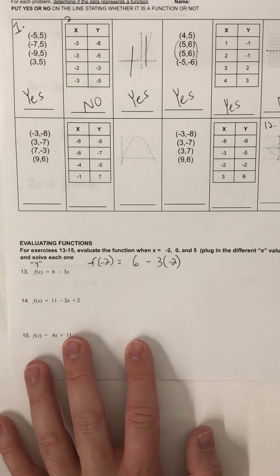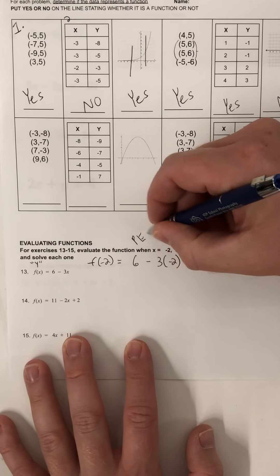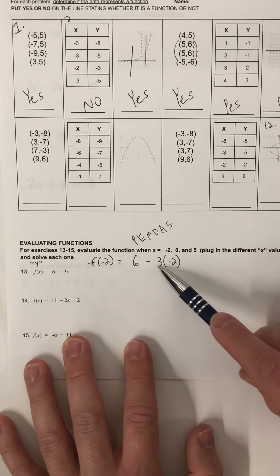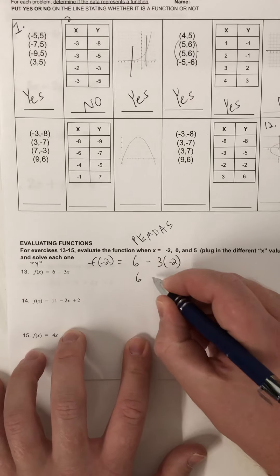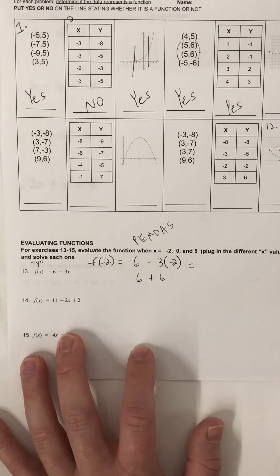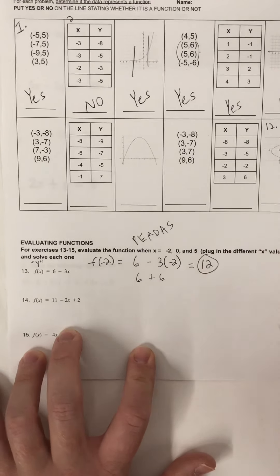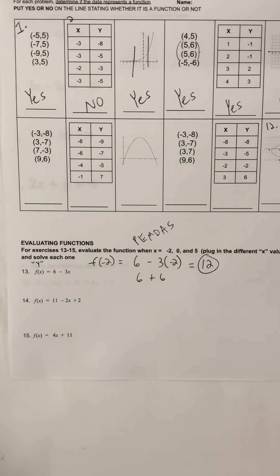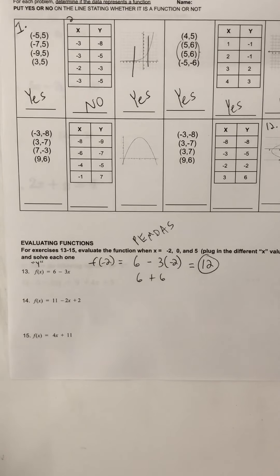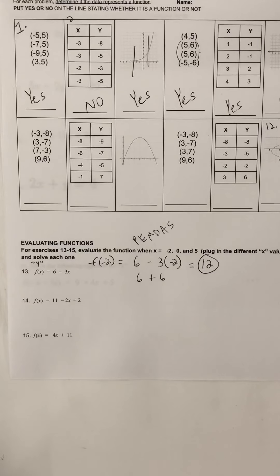So here I have 6 minus 3x — instead of x I plugged in negative 2 right there, so it becomes 6 minus 3 times negative 2. We're going to solve this one at a time, three different ways. The first input is negative 2. Negative 3 times negative 2 — remember PEMDAS, our order of operations — we always do multiplication before addition and subtraction. Two negatives make a positive: 6 plus 6 is 12.